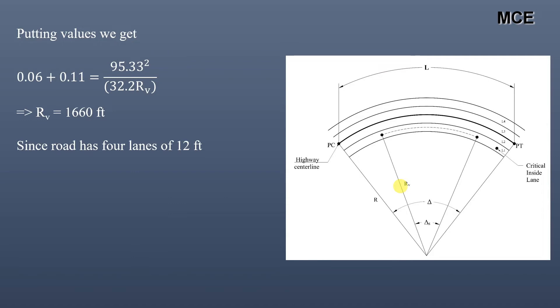Since this curve has four lanes of 12 feet, the radius of the curve is Rv + 12 + 12/2 = 1660 + 18 = 1678 feet. This gives us the radius of the horizontal curve centerline.